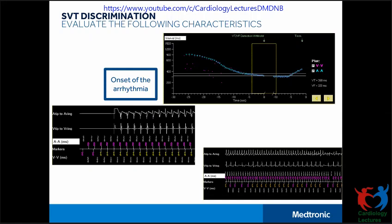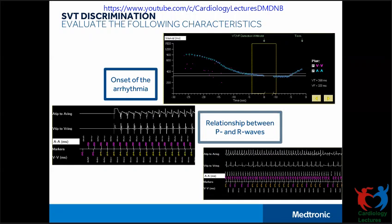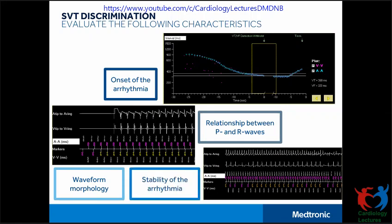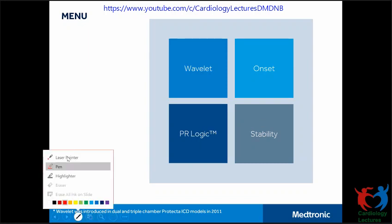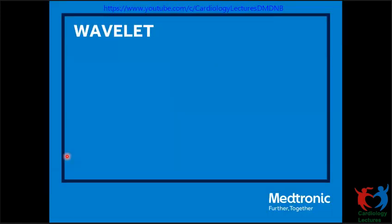The SVT discriminator evaluates the following characteristics: the nature of the onset of the arrhythmia, the relationship between the P and R waves, the waveform morphology, and the regularity of the arrhythmic rate. All four discriminators are available in the dual chamber ICD as well as CRTDs. In the single chamber ICD, all are available except PR Logic. Let's first start with Wavelet.